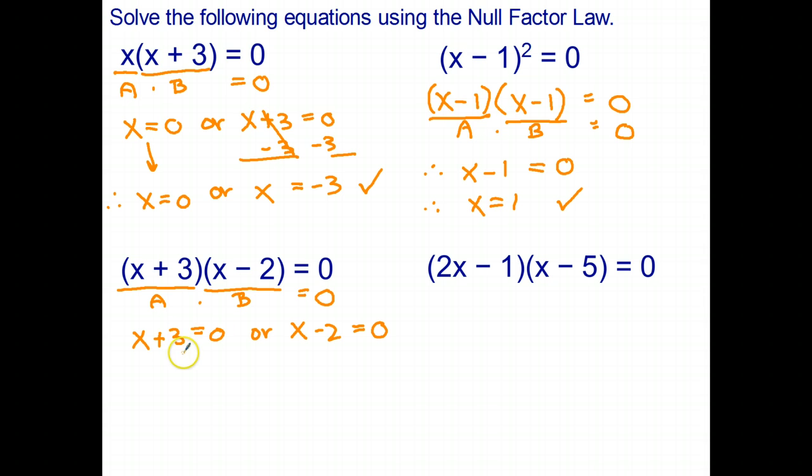Solving that equation, subtract three from both sides, and we get x equals negative three. And add two to both sides, we get x equals two. And there's our two solutions to that quadratic equation.